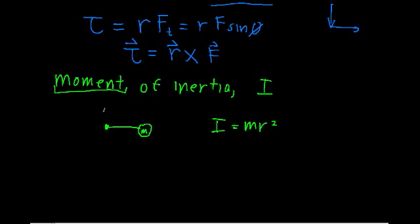Now if you have multiple point masses, let's just say that we have another point mass here and another point mass here. In which case, the total moment of inertia would just be the sum of all the individual ones. So for a collection of particles, the total moment of inertia is just the sum of the individual moment of inertias.